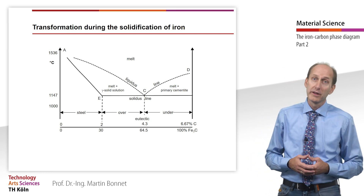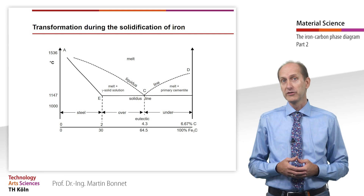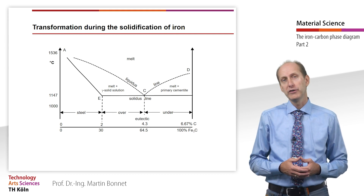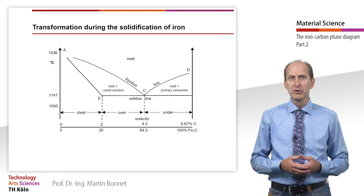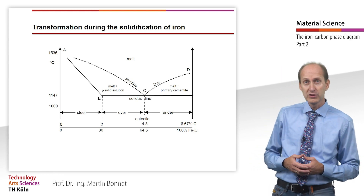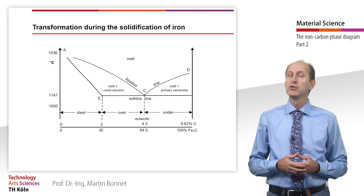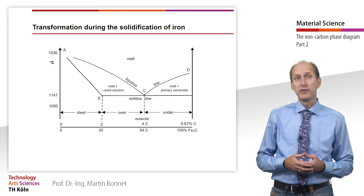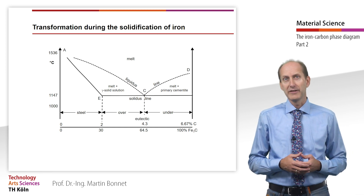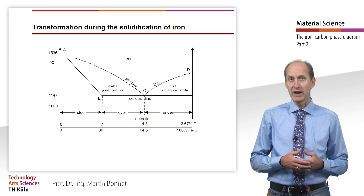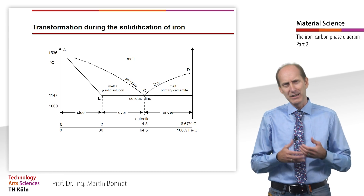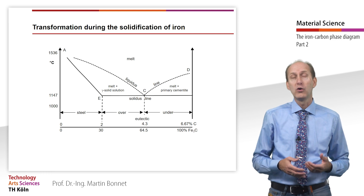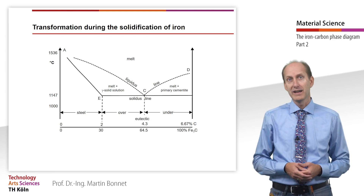Consequently, the carbon content of most cast iron materials is at or slightly below 4.3%. Homogeneous gamma solid solutions develop up to a carbon content of 2%, which corresponds to the area of forgeable steels. As soon as the microstructure contains ledeburite, which is hard and brittle, the material can no longer be hot or cold worked. It can only be cast.